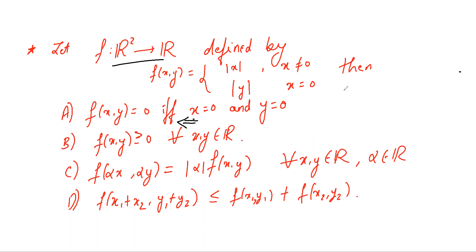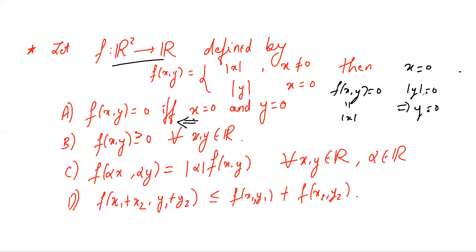To prove the converse, let f(x, y) = 0. Now f(x, y) is either mod x or mod y. If it is mod x then x = 0, but f cannot equal mod x when x = 0. So it should be mod y when x = 0. Then x = 0 and mod y = 0 implies y = 0. So in any case x = 0 and y = 0, and hence option A is correct.